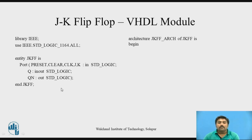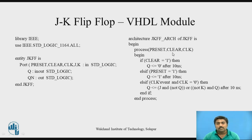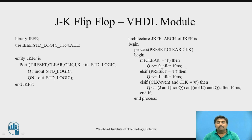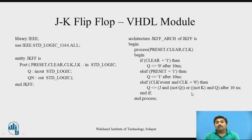In the architecture, the process has a sensitivity list of preset and clear. Inside the process: if clear equals 1, output Q is 0 after 10 nanoseconds. You can specify delays in the VHDL module. Else if preset equals 1, output is 1 after 10 nanoseconds. If both conditions are false, we check whether a clock event is occurring and clock equals 0.